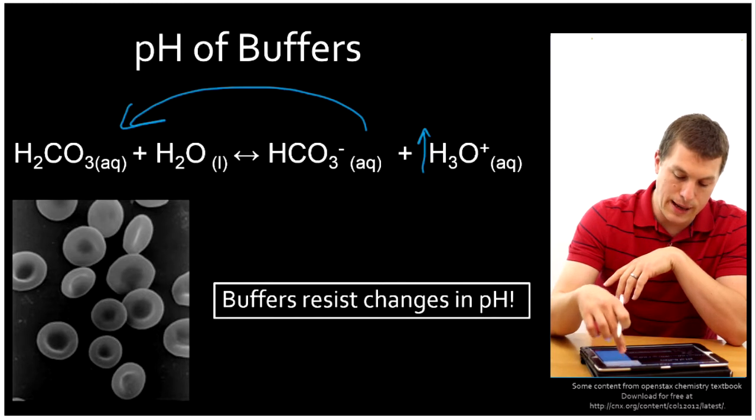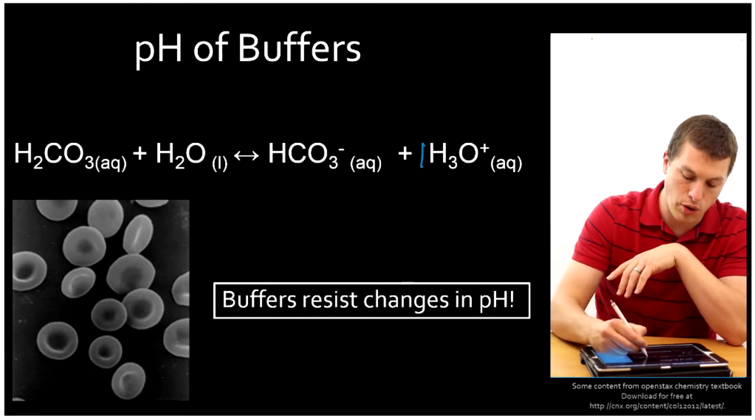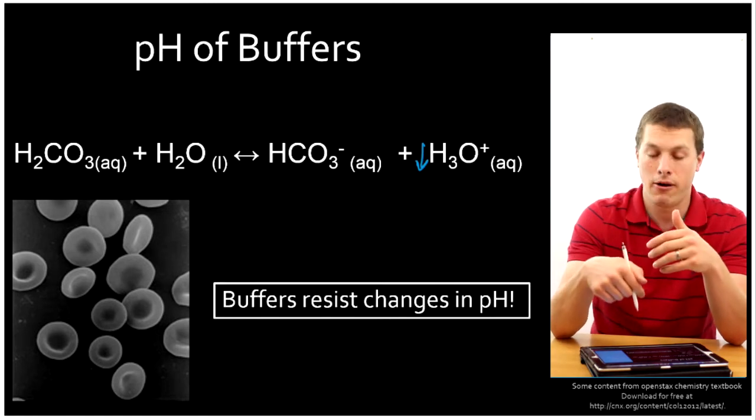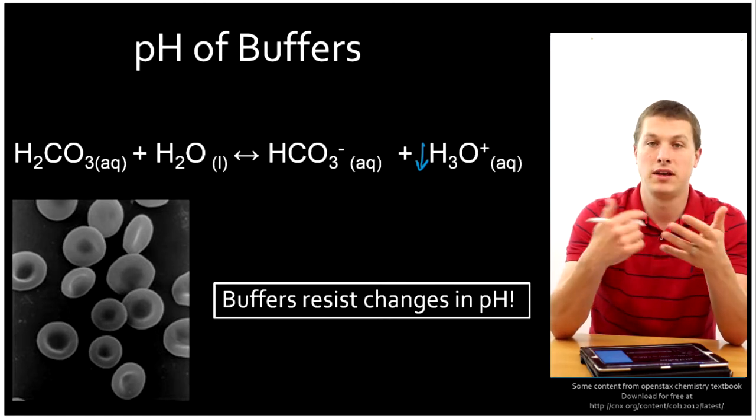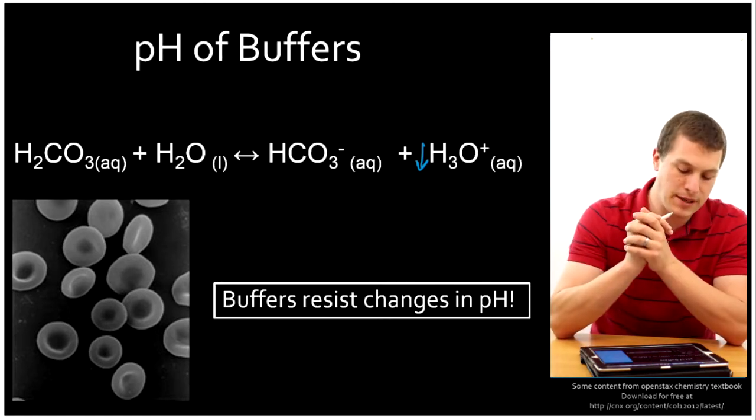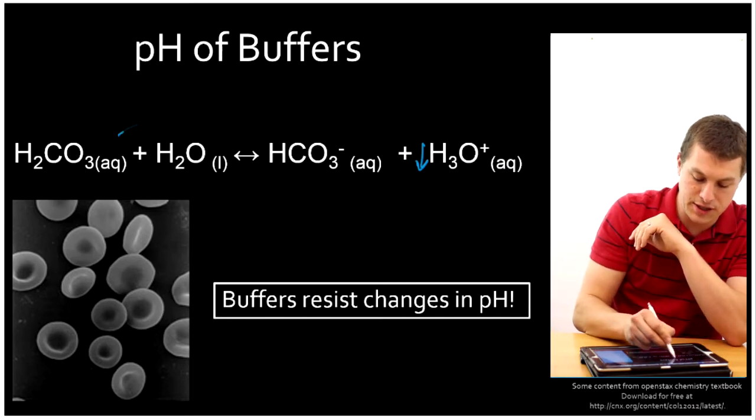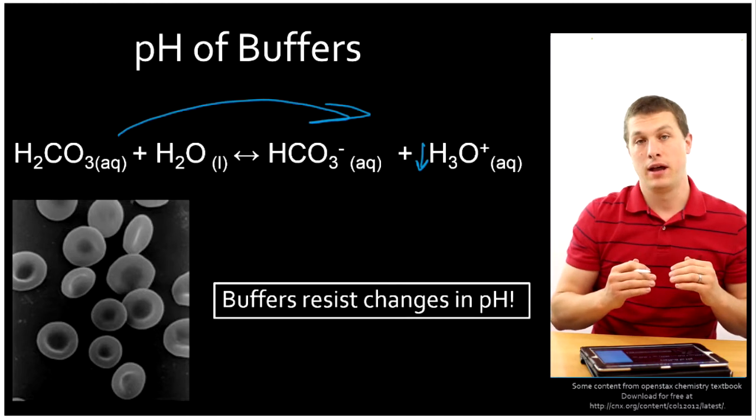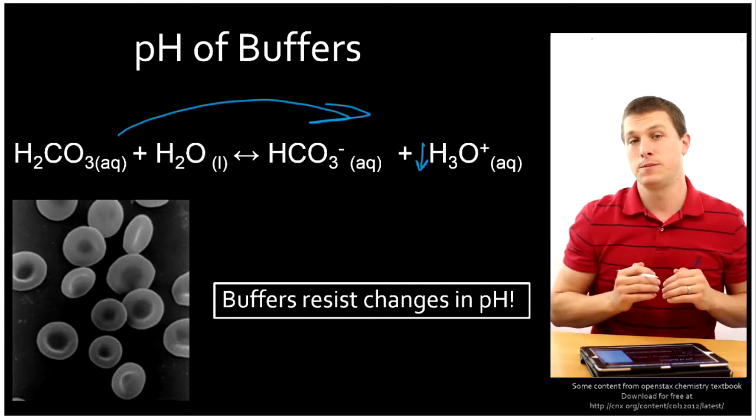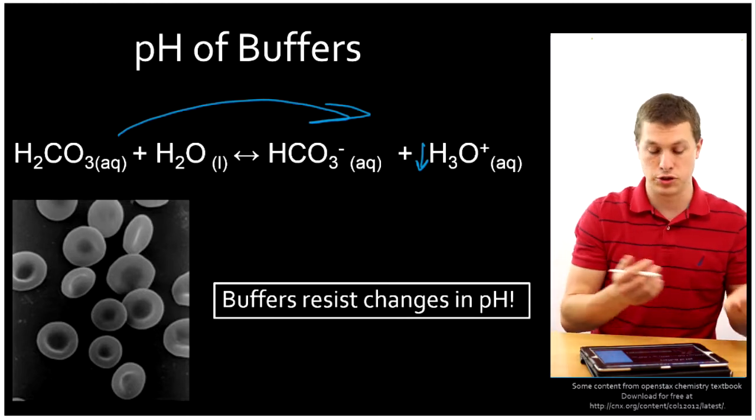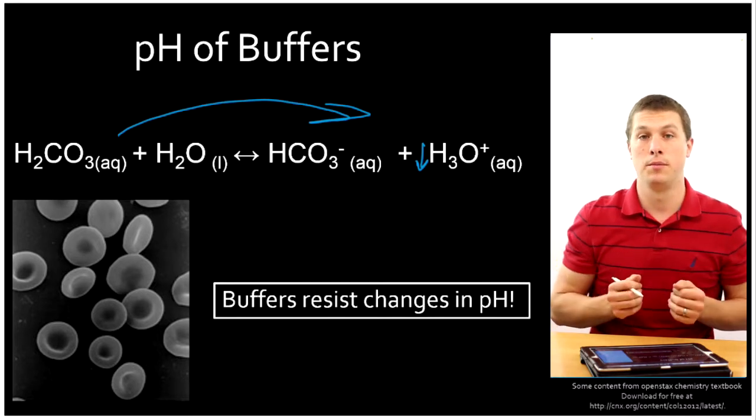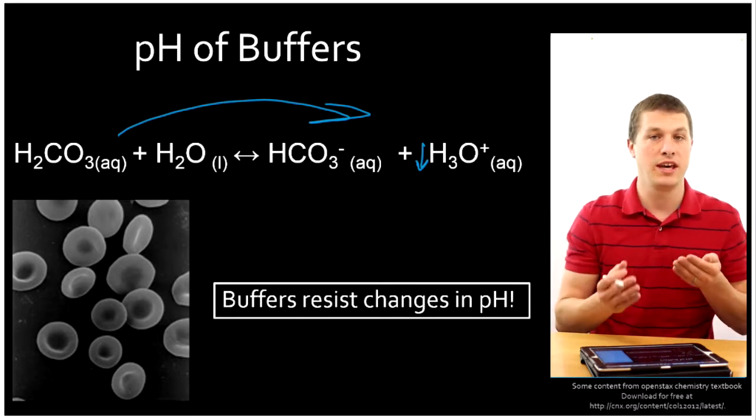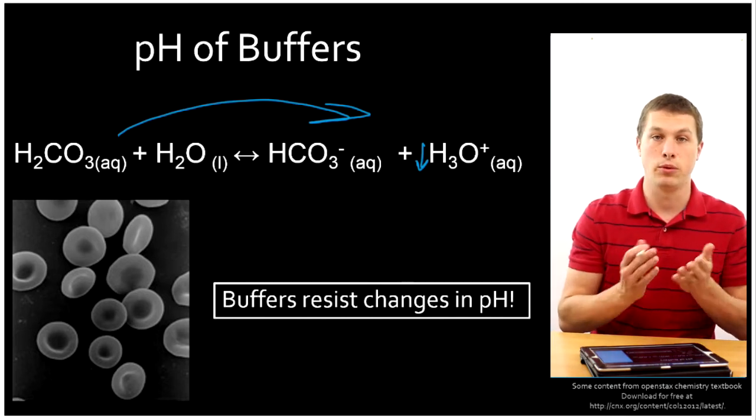On the other hand, if I add base, that's going to pull away H3O+. Remember if I add like sodium hydroxide, the hydroxide reacts with H3O+ and makes another water. And what that means is the equilibrium is going to shift to the right this way. So I would have dropped H3O+ by a lot, but it's dropped by less than you'd expect because of Le Chatelier's principle shifting to the right and reforming some of those hydronium ions. So a buffer resists the change of pH by putting a weak acid and a weak base in equilibrium.